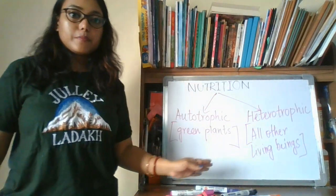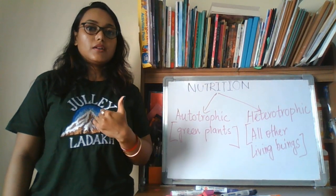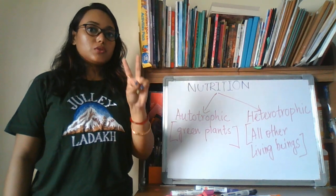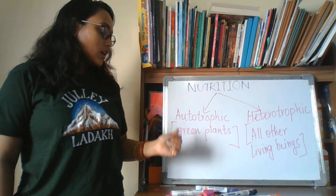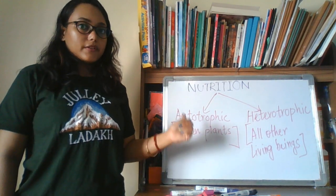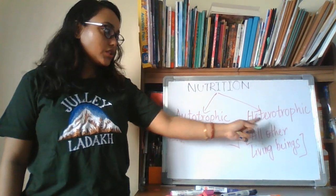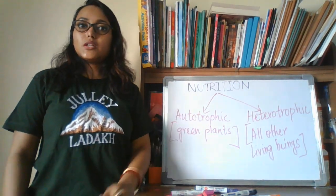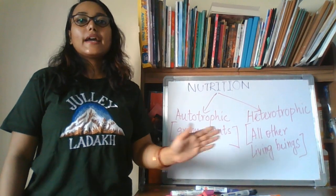Before ending, the mind map. Today we learned nutrition, the mode of food intake. Depending on the mode, there are two categories of nutrition. That is autotrophic nutrition. Green plants will be under this category because they can prepare their own food. And the second category is heterotrophic nutrition. All other living beings, including humans, will depend on plants for our food. So, we are called heterotrophs.